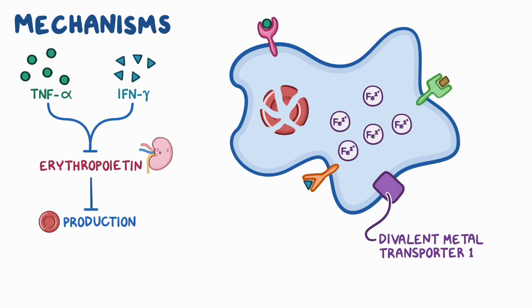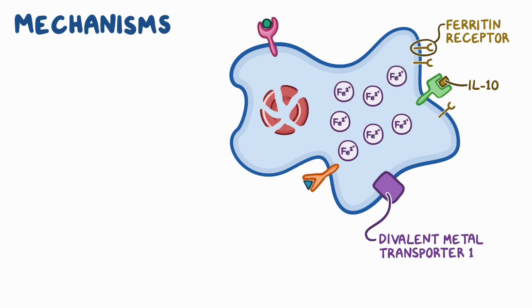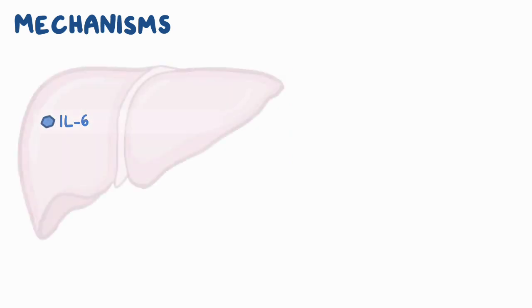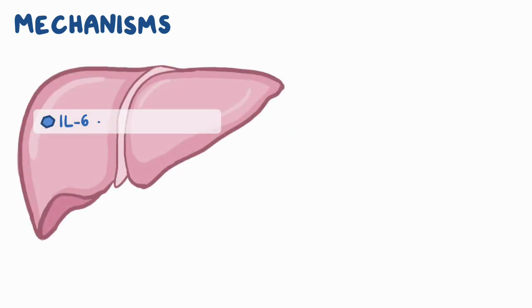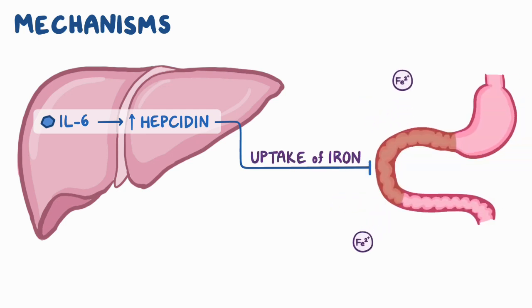Another cytokine called IL-10 mediates the expression of increased ferritin receptors on the surface of macrophages, which then sequesters even more iron. Finally, IL-6 also works in the liver by increasing production of a molecule called hepcidin, which blocks further uptake of iron from the small intestine.